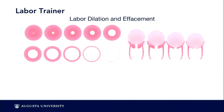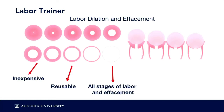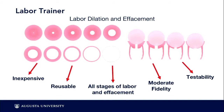For a second task assigned for the summer, we were improving a labor dilation and effacement model for the OBGYN center's bootcamp — for medical students to learn basic OBGYN procedures before seeing real patients on their third and fourth year rotations. The goal was to make an inexpensive, reusable model showing all stages of labor and effacement. This included about 17 or so models at moderate fidelity, and it's currently being tested in Augusta.